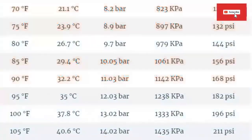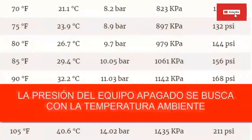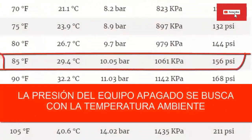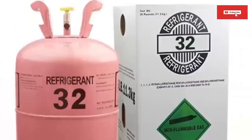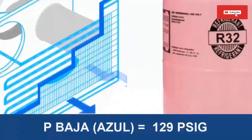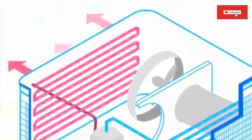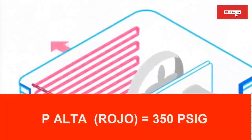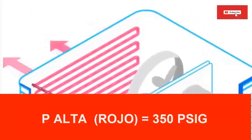Another important pressure value is the equipment pressure when it is turned off. For the same room temperature of 30 degrees Celsius, the table gives a pressure value of about 156 psi. For an evaporator temperature of 5 degrees Celsius, the pressure gauge on an R32 air conditioner should read about 129 psi. The high pressure for an R32 unit at an outdoor ambient temperature of 13 degrees Celsius should mark close to 350 psi.